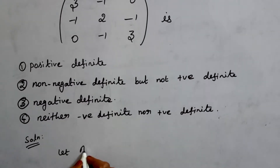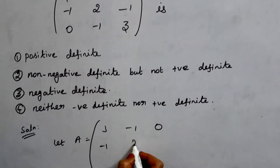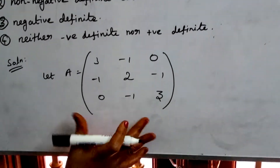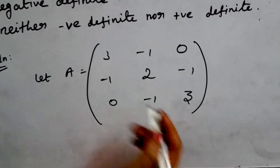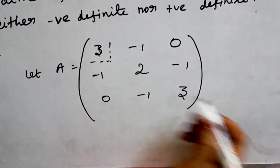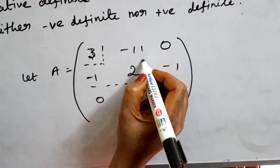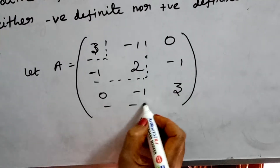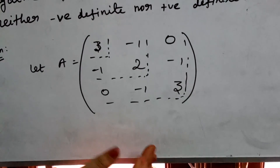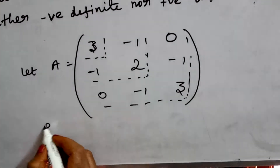Let A be the given 3x3 matrix: [[3, -1, 0], [-1, 2, -1], [0, -1, 3]]. We will check the leading principal minor of order 1, order 2, and order 3. If all three values are positive, the given matrix is positive definite.